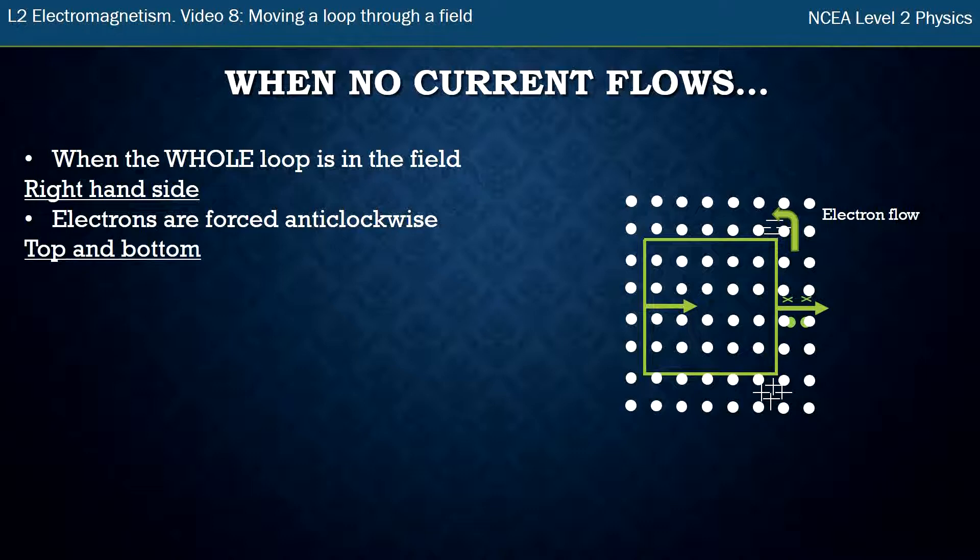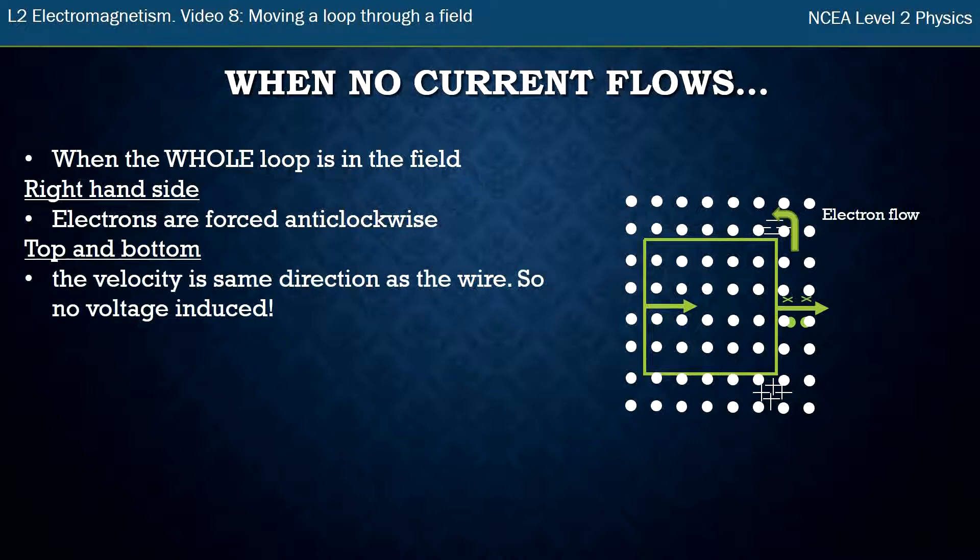Then if we look at the top and bottom sections of the wire, let's just look at the top section. The top section runs left to right but the whole loop is moving towards the right. So the velocity is the same direction as the wire. Remember we need everything to be perpendicular.